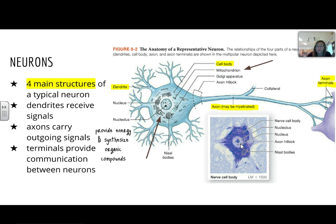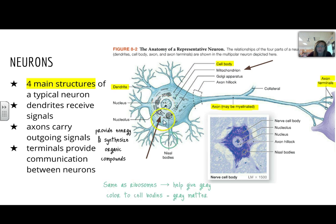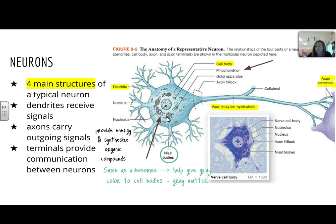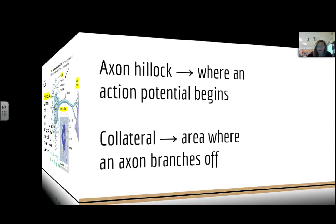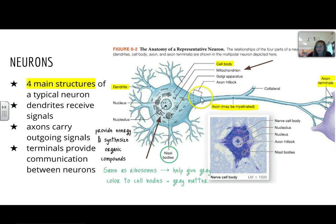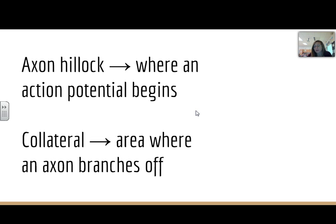You also have here some organelles that provide energy and synthesize organic compounds — some probably look familiar: mitochondria, Golgi apparatus, nucleus, nucleolus. We also have these Nissl bodies that are actually like the ribosomes on the rough ER of the nerve cell, and they help give color to the cell bodies, which make up all of our gray matter. There's also the axon hillock — this is where an action potential is going to begin. And we also have collaterals, which are areas where axons will actually branch off each other.